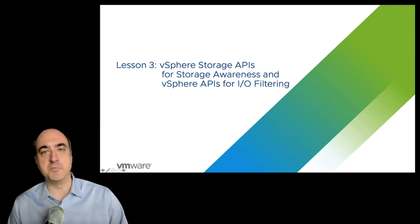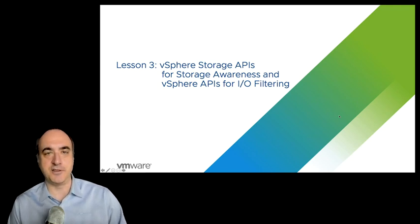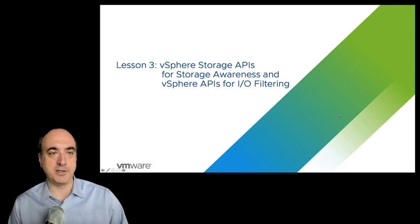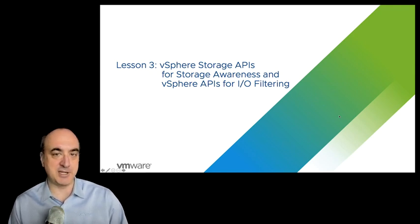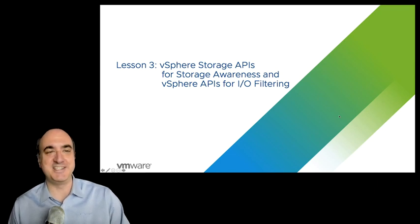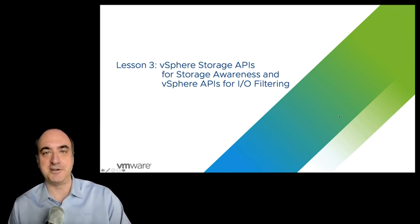These are actually more familiarly known as VASA — V-A-S-A — and the other one is known as VAIO — V-A-I-O. Apparently the letter F was a bit too expensive for this API. But anyway, this is our explanation of these two different APIs. VAIO comes after VASA.